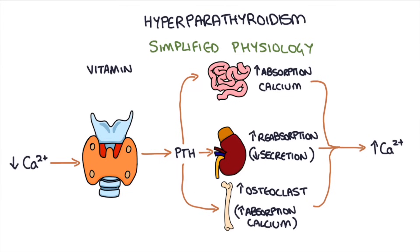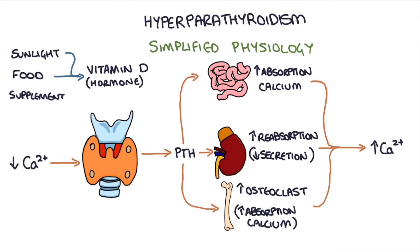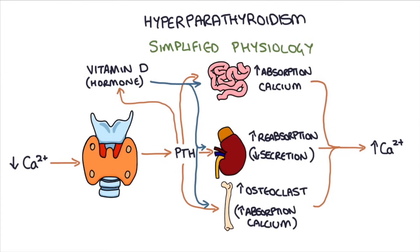The other player in the game is vitamin D. Vitamin D is a hormone that the body creates in response to sunlight, but it can also be obtained through food or supplementation. To simplify what vitamin D does, it acts on all of the processes we talked about to increase absorption of calcium from the intestines, kidneys, and bones. Parathyroid hormone also acts on vitamin D to convert it into some of its active forms.